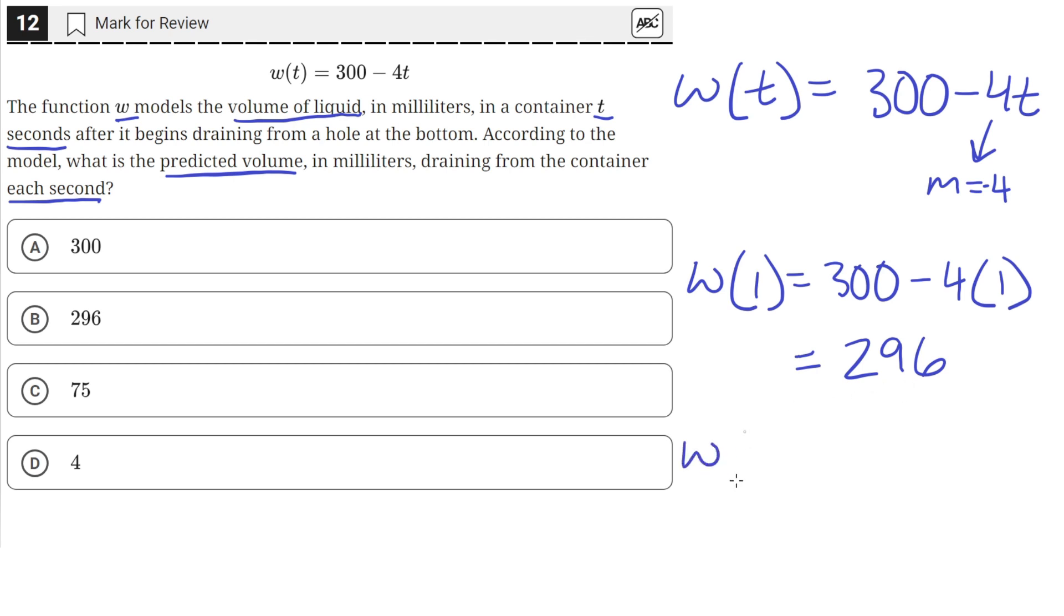And then w of 2 is equal to 300 minus 4 times 2, since 2 seconds have passed. So this is just equal to 300 minus 8, which is 292.